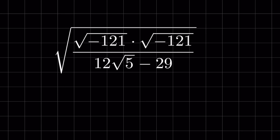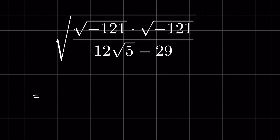We need to simplify √(-121) × √(-121) divided by (12√5 - 29), all under a square root, without using a calculator. Let's try. First of all, we have to understand what to do with a negative sign inside the square root.